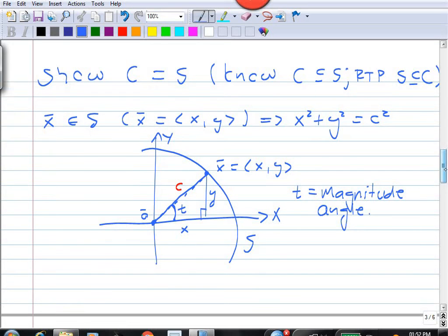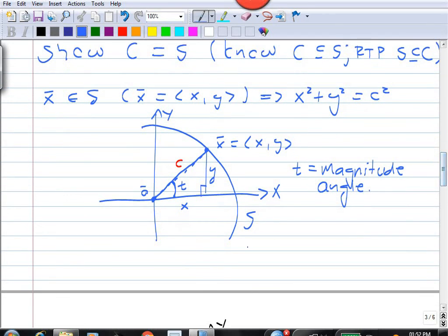Now, in this triangle, we see that cos t is adjacent over hypotenuse. So, x over c,